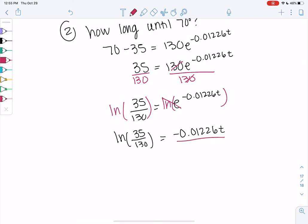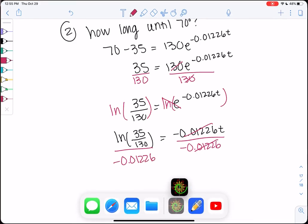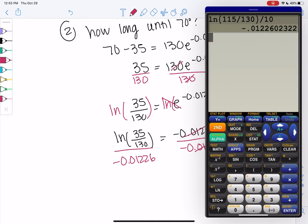And finally, the last step is to divide by negative 0.01226. And that will tell us how long. And so since we have an application, we want to use the calculator to get an estimate. So we'll do ln of 35 over 130 in parentheses divided by negative 0.01226. Enter. And we get about 107 minutes.